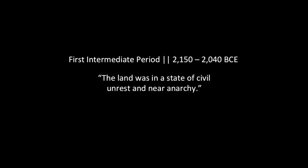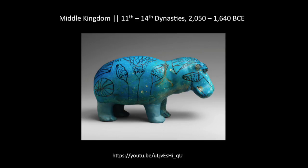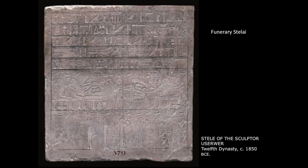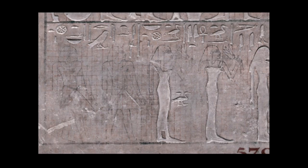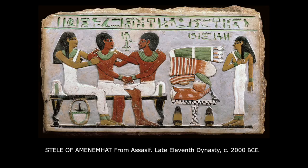The First Intermediate Period: the land was in a state of civil unrest and near anarchy, and art did not thrive during this period. For the Middle Kingdom, watch the video on the Blue Hippo. Only the wealthiest and noblest ancient Egyptians could afford tombs, but prosperous people could still commission funerary stelae depicting themselves, their family, and offerings of food — monuments meant to preserve the memory of the deceased and inspire the living to make offerings. One stelae is unique because it is unfinished, giving us a special glimpse into how the sculptor worked using a grid pattern drawn directly on the stone. Unfortunately, this stonecutter died before he finished his own funerary stelae.